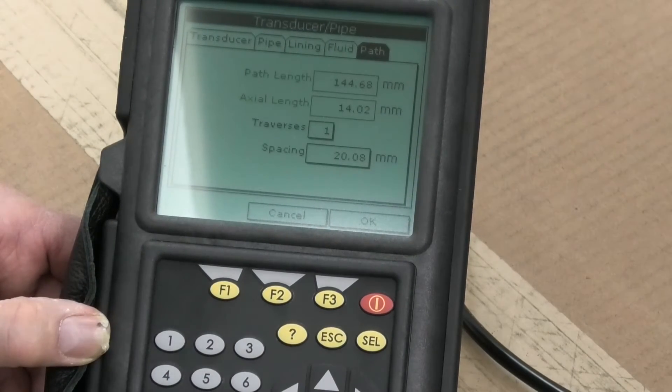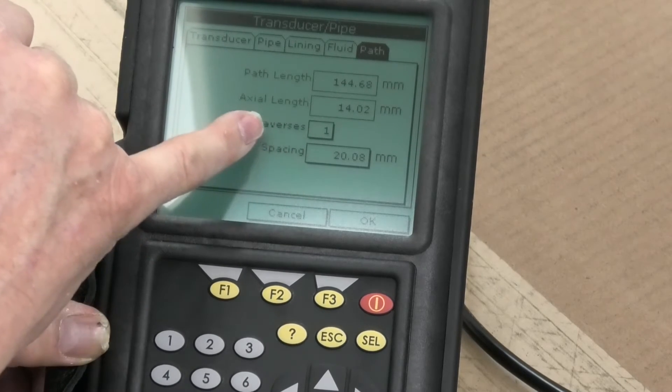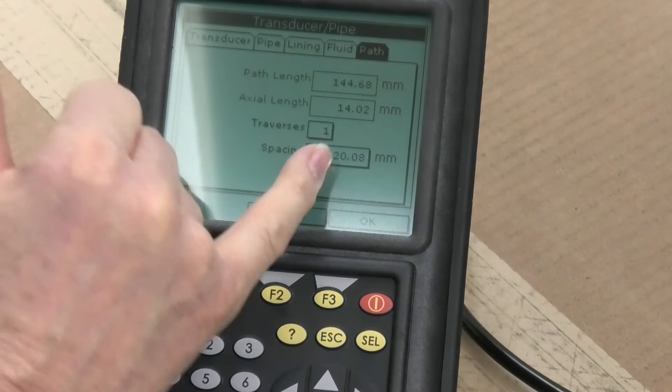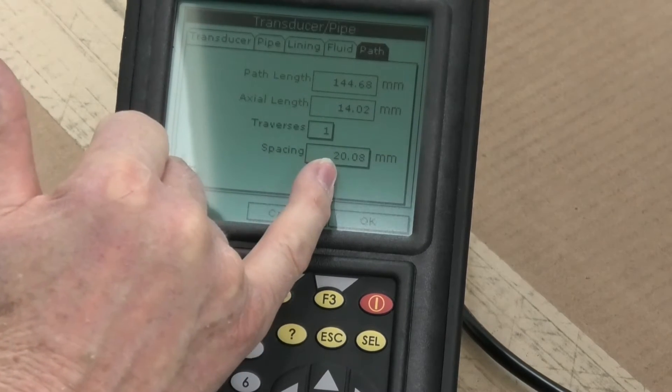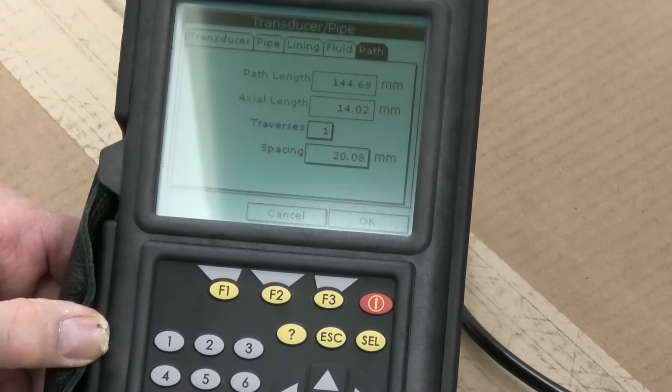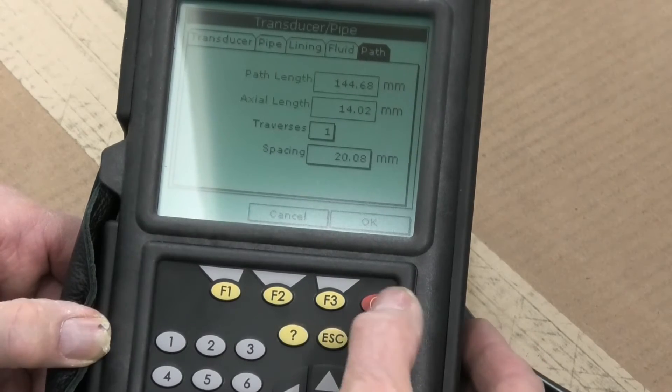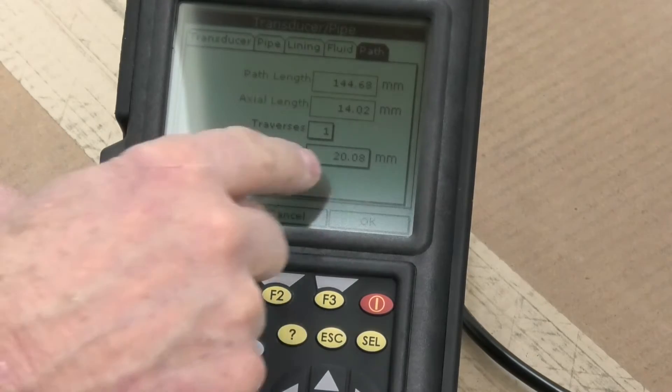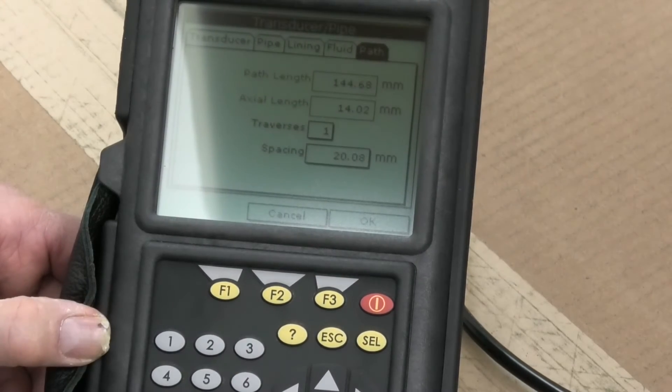Now the other point we've got to do over here, we come over to path. We usually use single traverse with gas measurement. In this case I'm using single traverse. This distance here is important, 20.08mm. That's how far apart the two transducers need to be. Once we push okay, the instrument is set up.